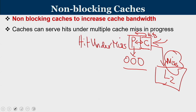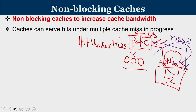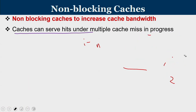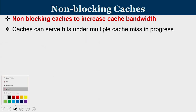The cache can supply instructions that are hits even when a miss is in progress. If a subsequent access also results in a miss, that is supported too — called miss under miss, allowing one more miss to be permitted in parallel. You need a support mechanism for parallel cache misses. This is called a non-blocking cache: once a miss is in progress we are no longer blocking the cache or the processor. For an out-of-order processor, a non-blocking cache is essential for delivering performance.